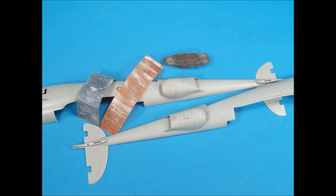After scraping the surfaces flat, they were sanded smooth with various grades of sandpaper and the plastic was then polished with 0000 steel wool.